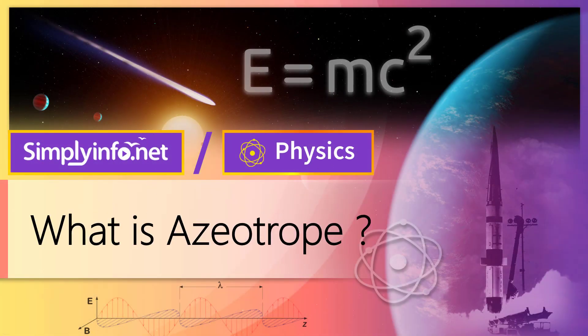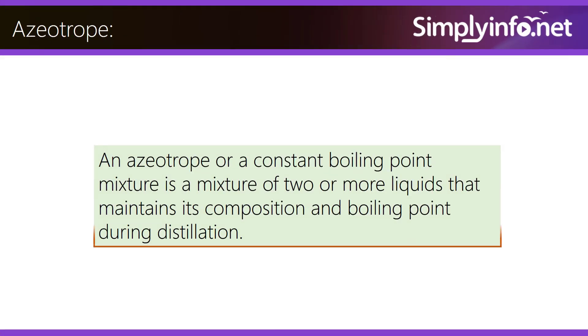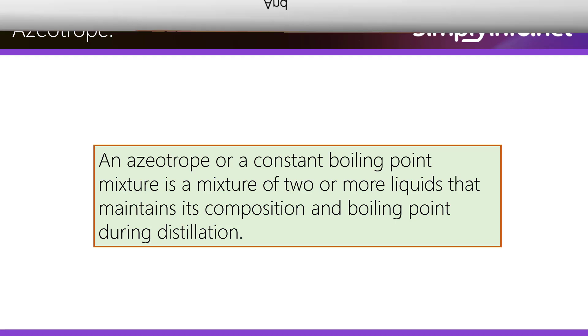What is an azeotrope? An azeotrope, or constant boiling point mixture, is a mixture of two or more liquids that maintains its composition and boiling point during distillation.